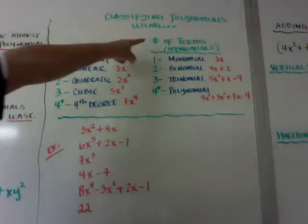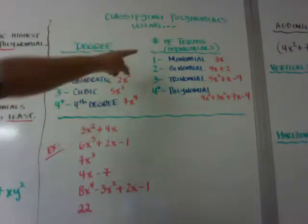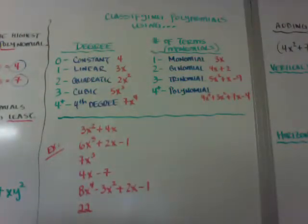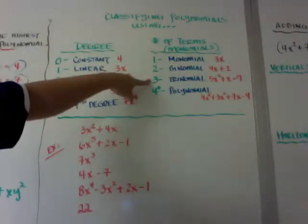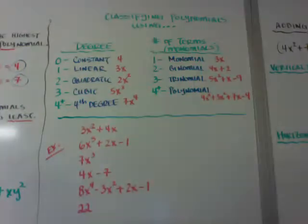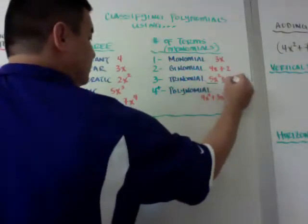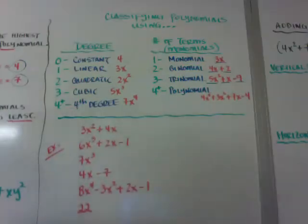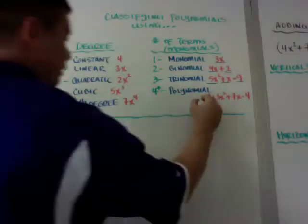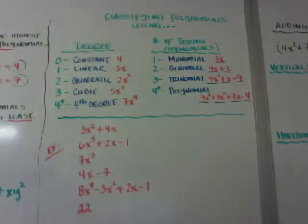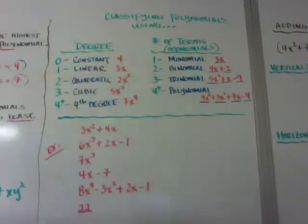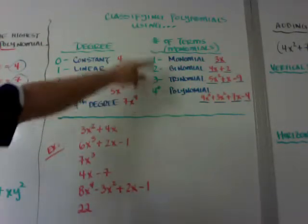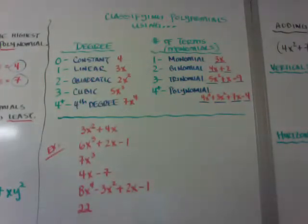Classifying polynomials by the number of terms: if there's only one term like 3x, it's a monomial. If there's two terms like 4x plus 2, that's a binomial — think of the number of wheels on a bicycle. Tricycle or trinomial — there's three different terms. And anything with four or more terms goes as a polynomial. And again, the tricky thing is that they are actually all polynomials, but the more specific terms would be monomial, binomial, trinomial, and polynomial for four or more.